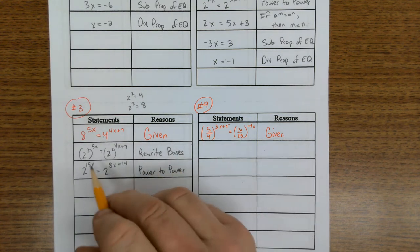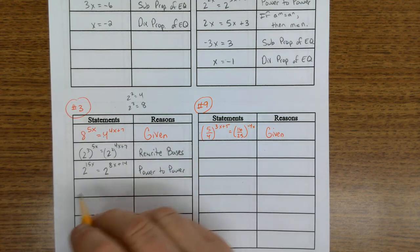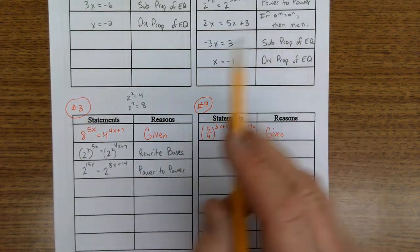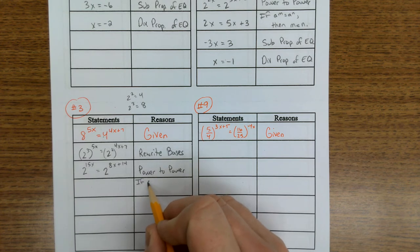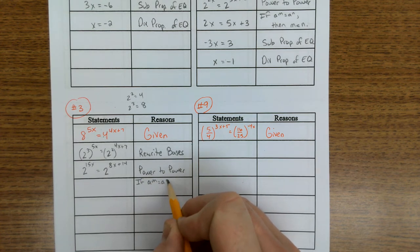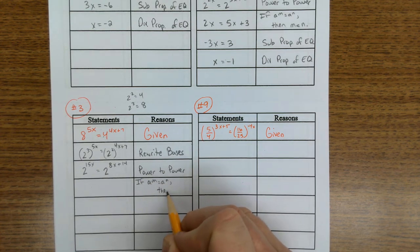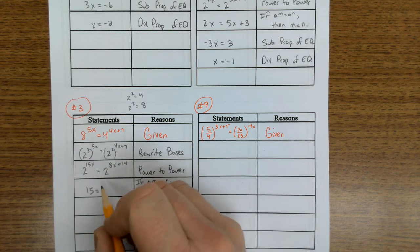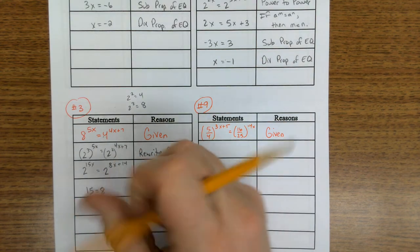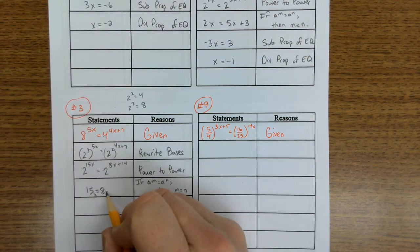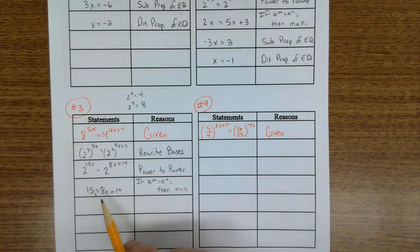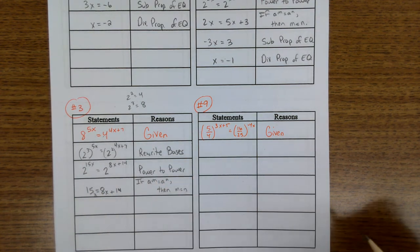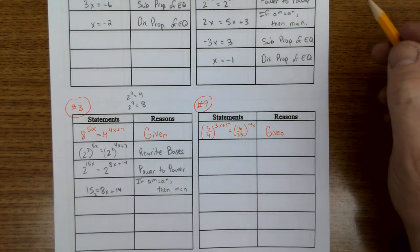Now we're at the point where we have the same bases, and we're going to use this rule, this if-then statement every single time. If we have this setup, then they are equal. So 15x is equal to 8x plus 14. I'll let you solve it from there. Subtract 8x from both sides and divide.